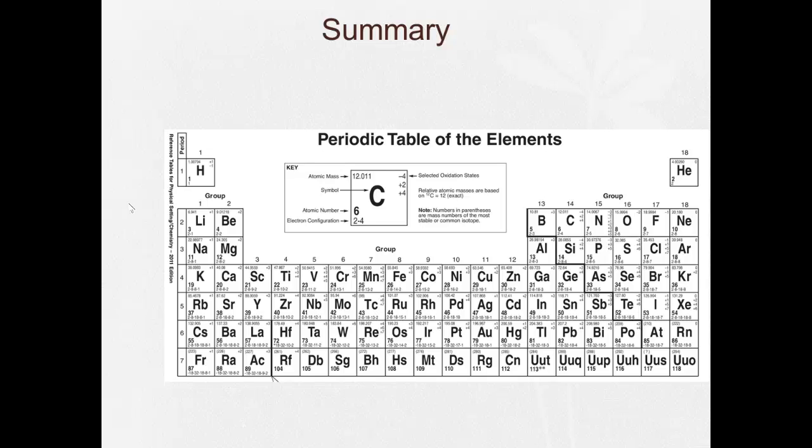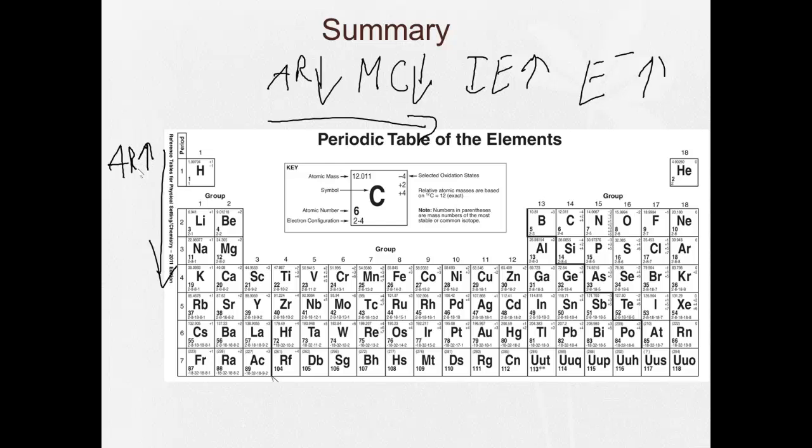All right, so let's summarize here. We have going across: atomic radius decreases, metallic character decreases, ionization energy increases, electronegativity increases. Go down the group, everything's the opposite. So as long as we remember this, we'll know: atomic radius increases, metallic character increases, ionization energy decreases, and electronegativity decreases.